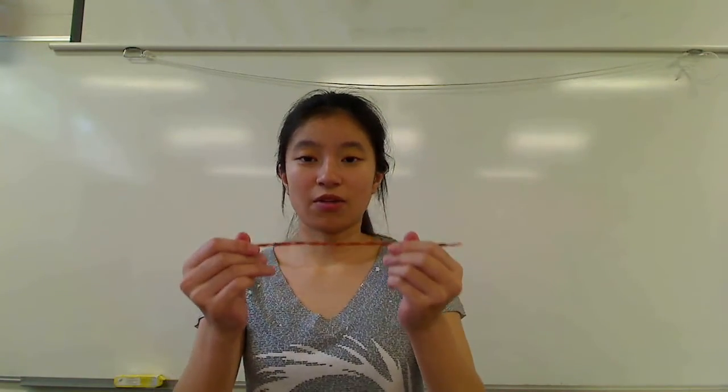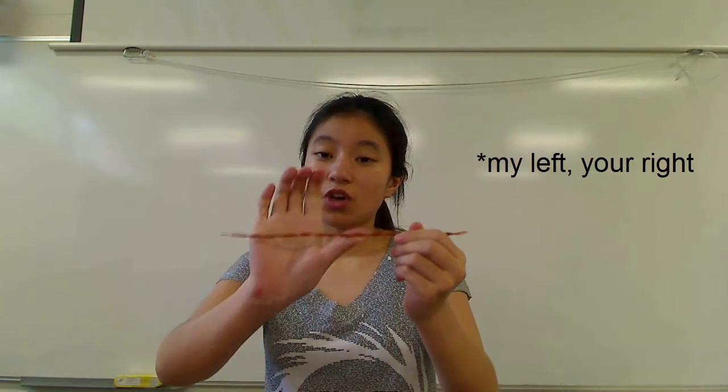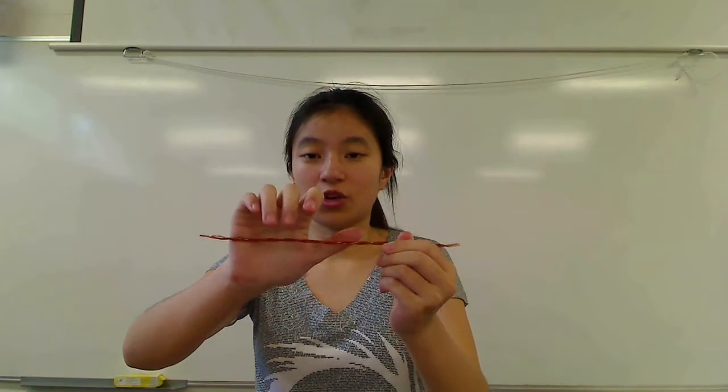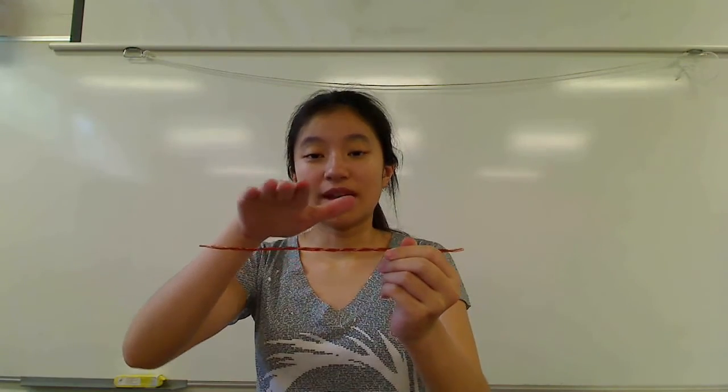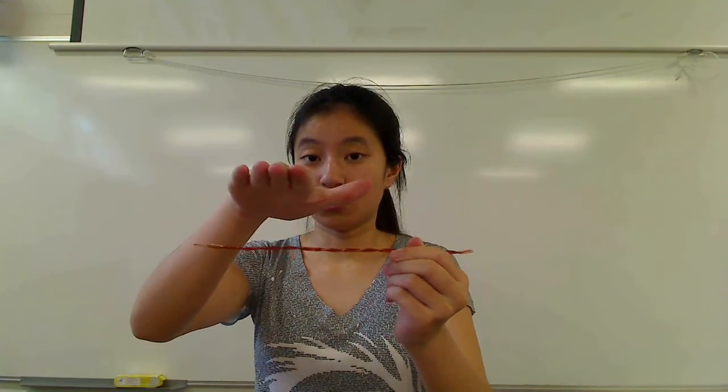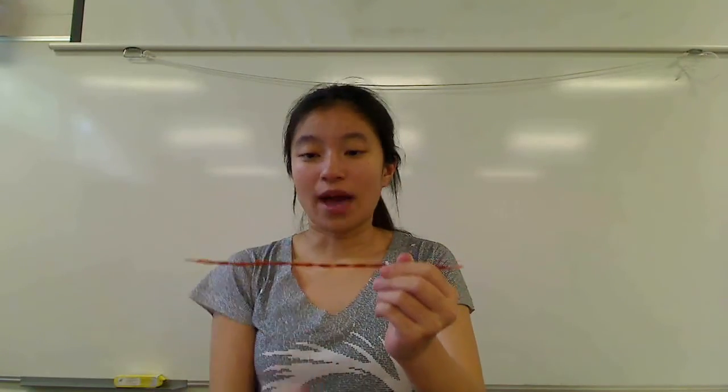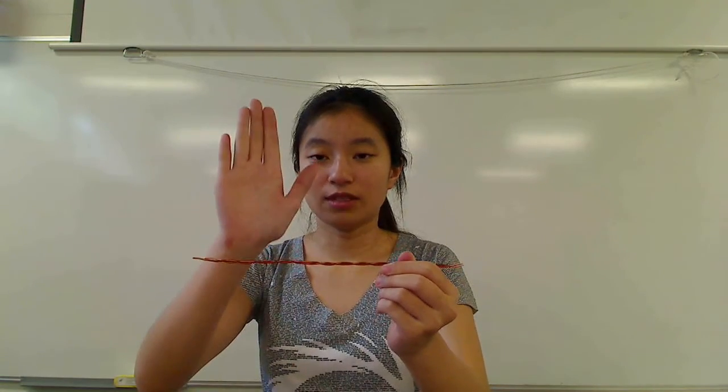So let's say you had a current carrying wire and in it there is a current going towards the left. You curl your fingers around the wire and the direction in which your fingers curl will show you the magnetic field. So in this case, on top of the wire the magnetic field points out of the screen towards you. In front of the wire the magnetic field points down. Underneath the wire the magnetic field points towards me and behind the wire the magnetic field points up.